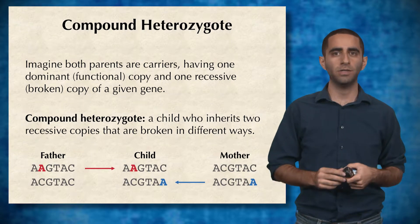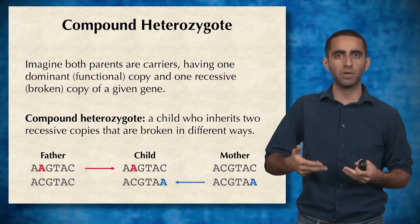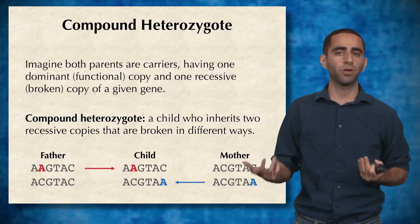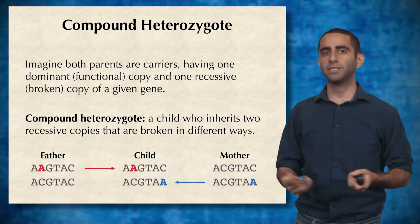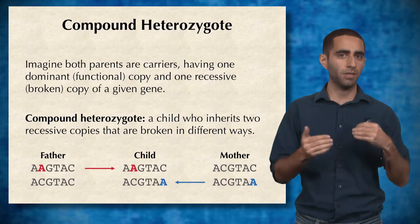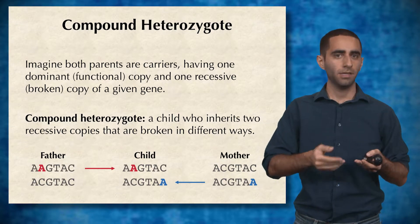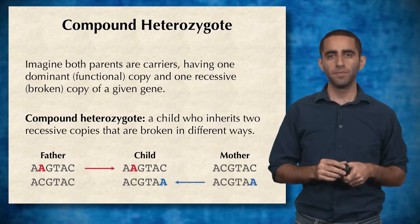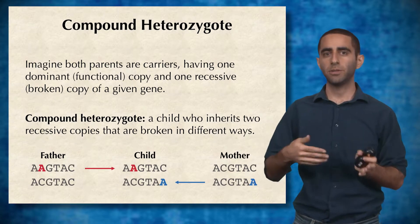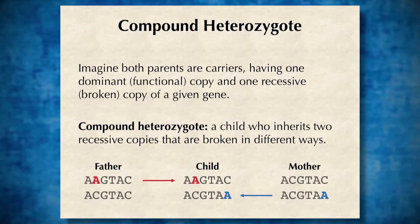A compound heterozygote is a child who inherits two recessive broken copies, but these two broken copies are broken in different ways. So in this toy example, we have a father who has one healthy copy — the bottom version — and has one mutated copy, this red A, that's actually broken. And we also have the mother who is in a similar situation: has one healthy copy, the top version, but has a broken copy in the bottom version. Her copy that's broken is broken differently — it has an A in the last position. And the child inherited each parent's broken copy, but within the child, now you have two different types of the broken copy. So the two copies are broken in different ways, making this child a compound heterozygote.